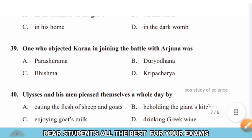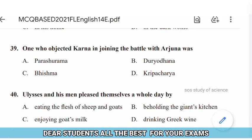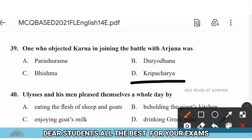Question 39: One who objected to Karna joining the battle with Arjuna was — options: Parashirama, Duryodhana, Bhishma, Kripacharya. The right answer is option D — Kripacharya is the one who objected to Karna joining the battle with Arjuna.